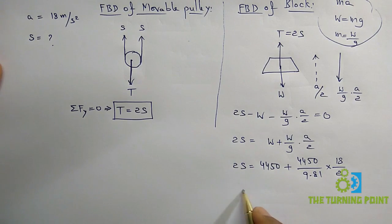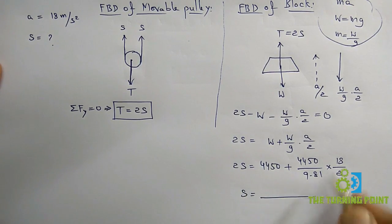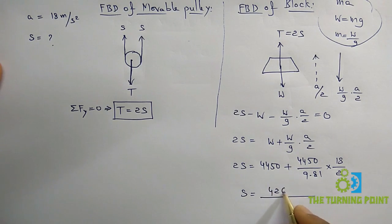From this you will get the value of S. When you simplify it, you will get 4266.28 newtons.